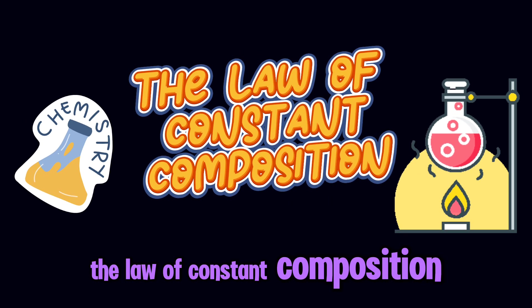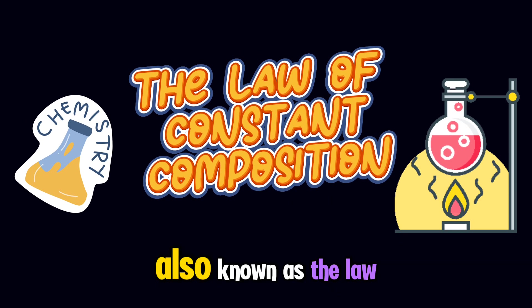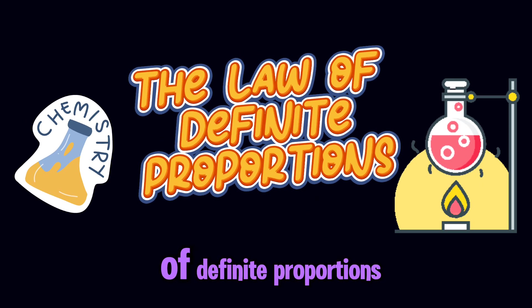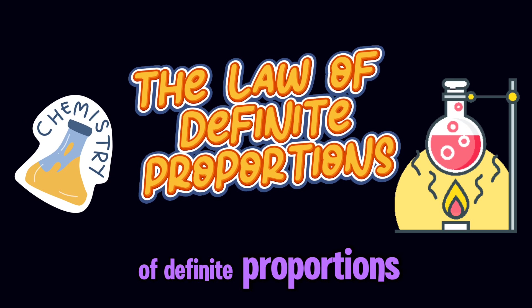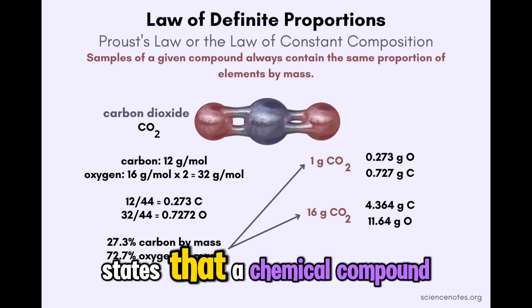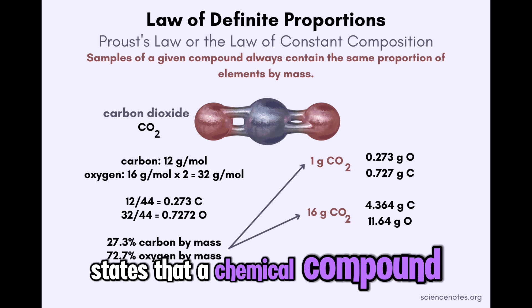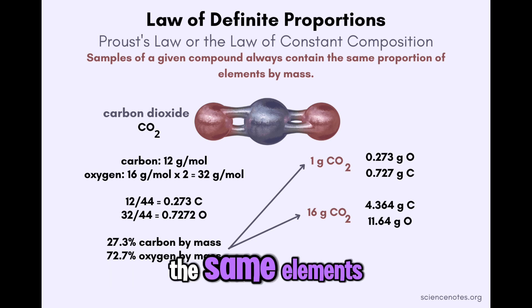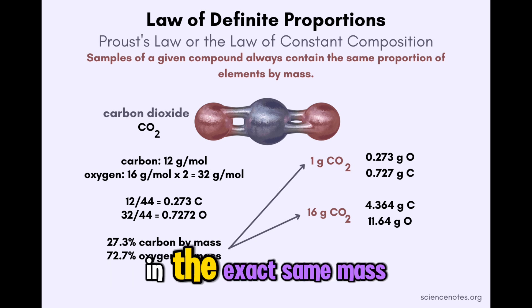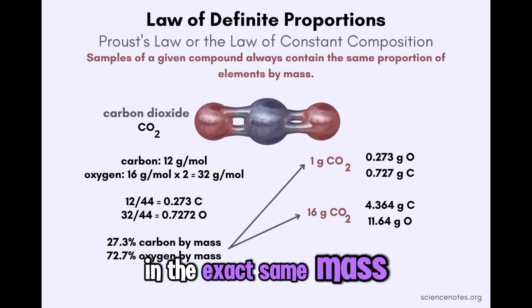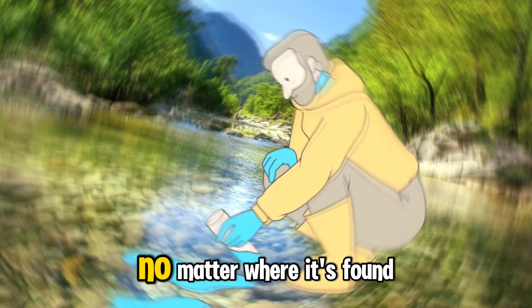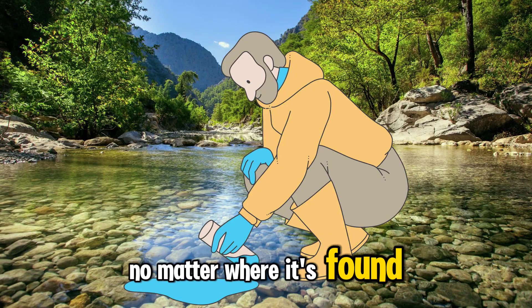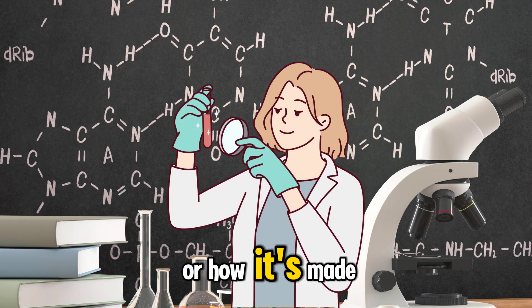The Law of Constant Composition, also known as the Law of Definite Proportions, states that a chemical compound will always contain the same elements in the exact same mass ratio, no matter where it's found or how it's made.